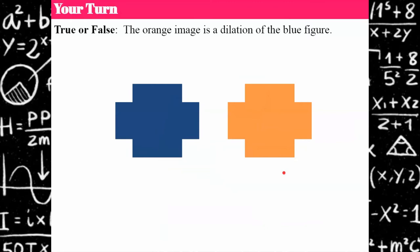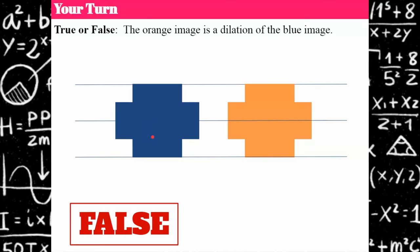Try another one. True or false: the orange image is a dilation of the blue figure. Welcome back — this would be false. If we lined up vertices, we could see that these lines would never intersect and meet at a center of dilation. These are congruent images, not similar.